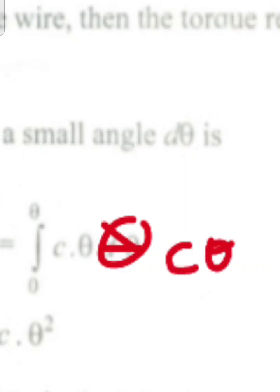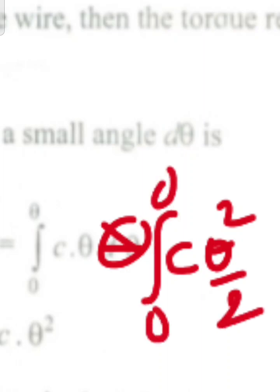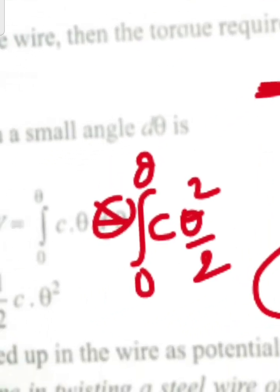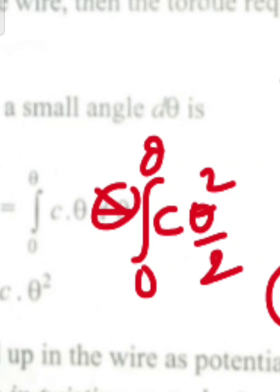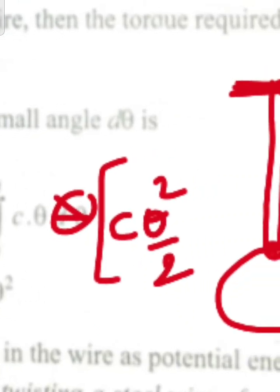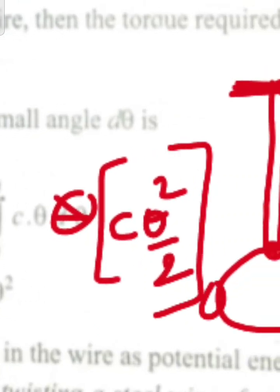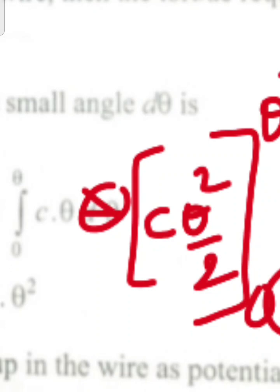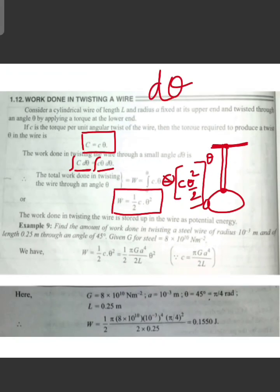Integrating, we get C theta squared by 2, with limits 0 to theta. Substituting, the result is W = 1/2 C theta squared. This is the work done in twisting the wire — very simple.